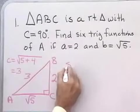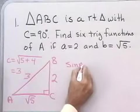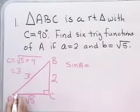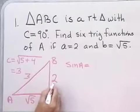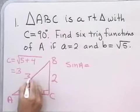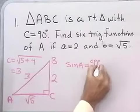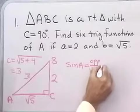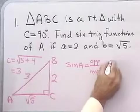Now, the sine of angle A. By definition 2 for the six trigonometric functions, sine is the side opposite divided by the hypotenuse. So opposite over hypotenuse gives us 2 divided by 3.